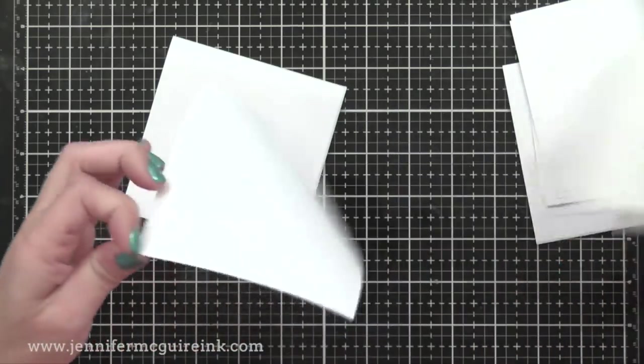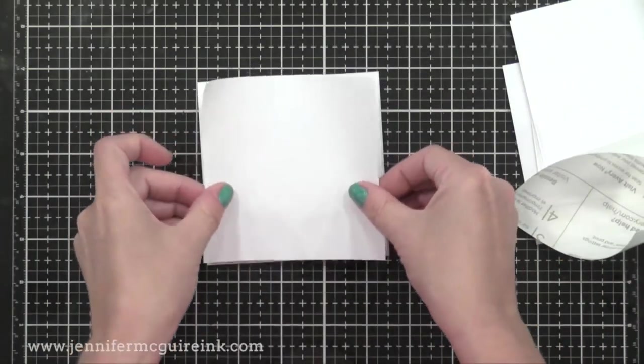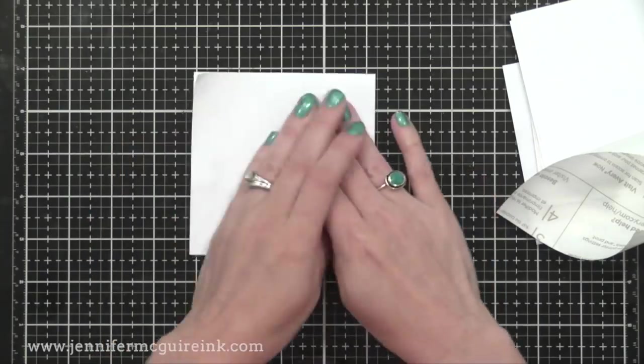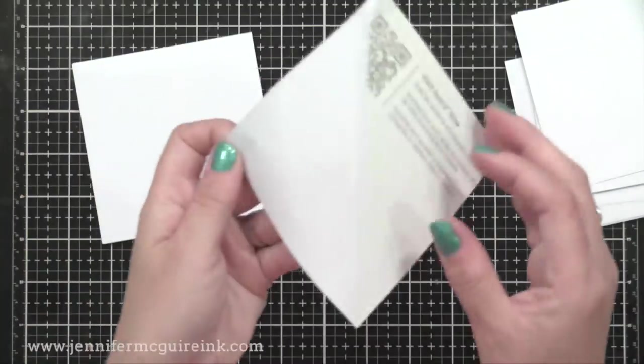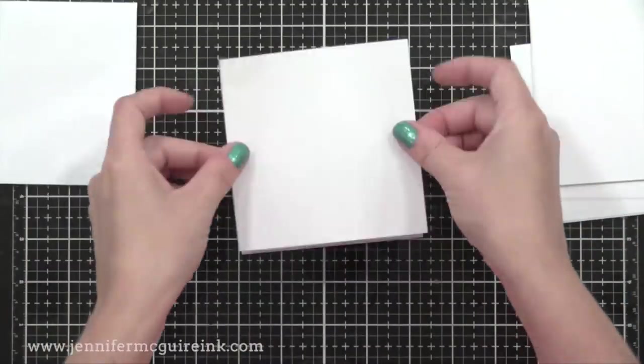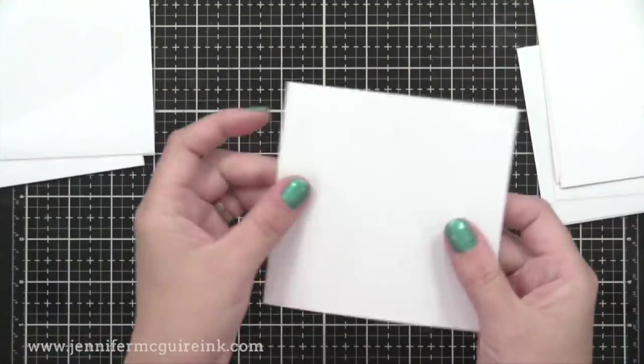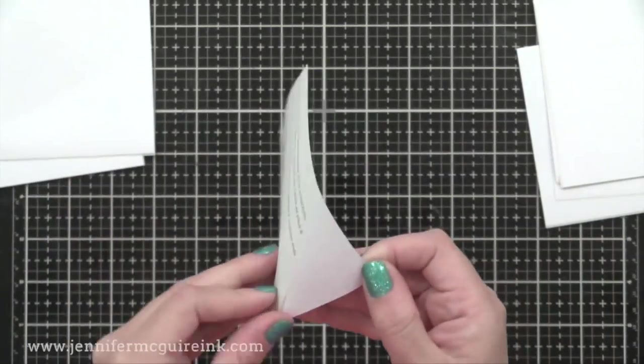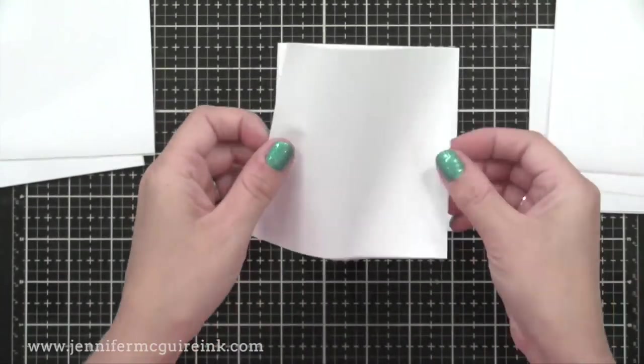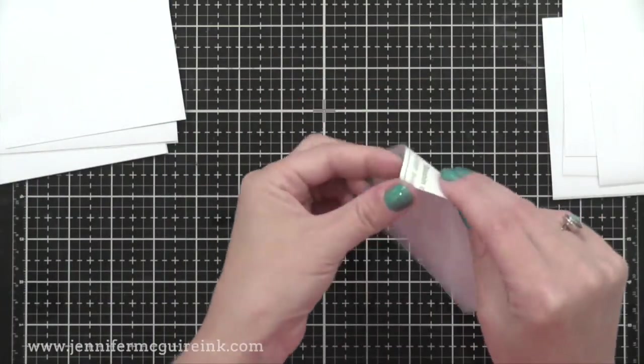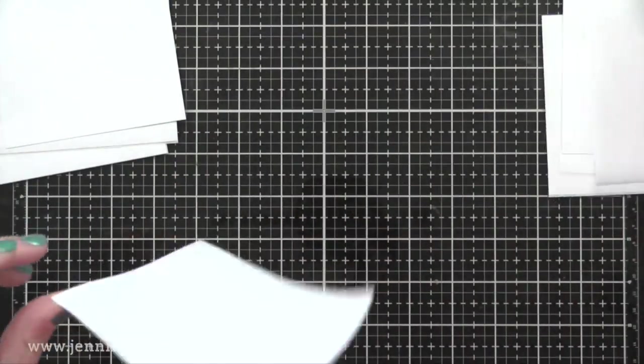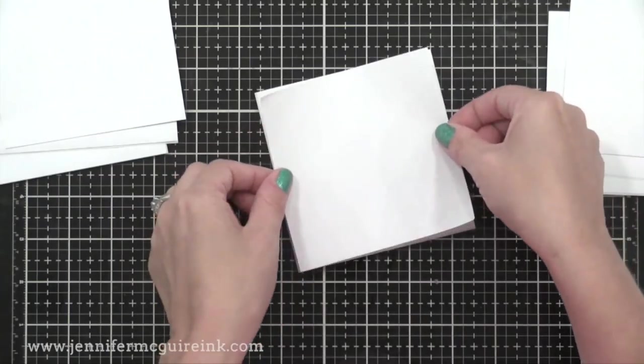Now, you could do one layer of this masking paper, but I'm actually going to double up my layer so that my mask is thicker. The only reason I'm doubling up my mask is because I plan to use my masks over and over again to make multiple cards. This will ensure ink doesn't bleed through the layers, but I've never had bleed through with these particular label sheets.